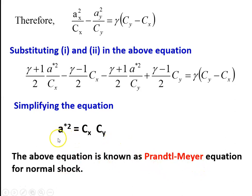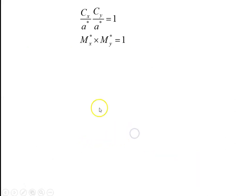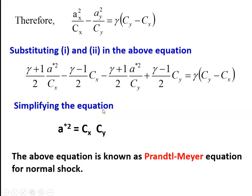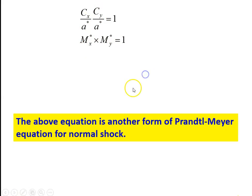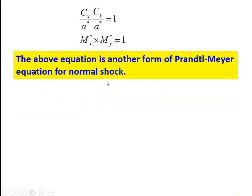The Prandtl-Meyer equation is a*² = Cx·Cy. Rearranging: (Cx/a*)·(Cy/a*) = 1, so Mx* · My* = 1. This is another form of the Prandtl-Meyer equation for normal shock. This equation is a very important conclusion for studying the behavior of the normal shock wave.